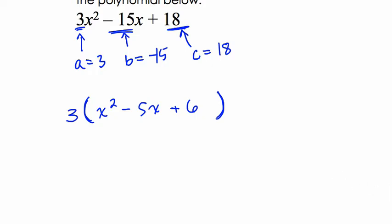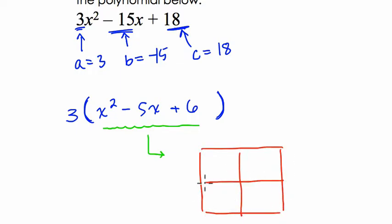What's nice about this is that I can easily factor this trinomial here. What I would do is use an area model. And what I would say is we've got to get x squared and we've got to get 6.